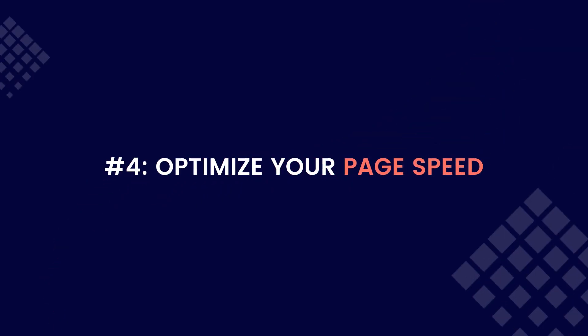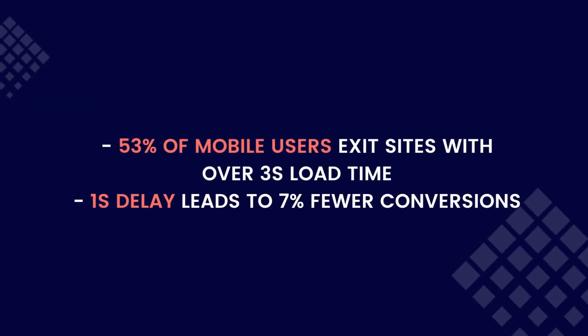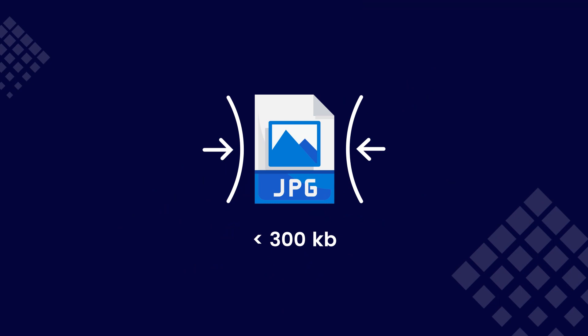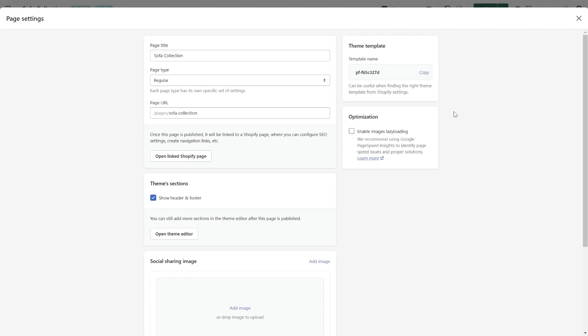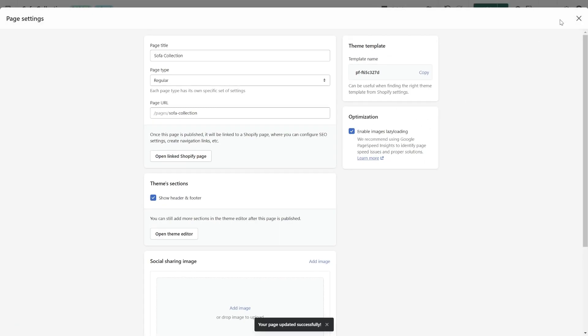Finally, optimize your page speed. In fact, 53 percent of mobile visitors leave a site that takes longer than three seconds to load, and a one second delay means a seven percent reduction in conversions. Here are our suggestions: compress and optimize your images, keeping the ideal weight around 200 to 300 kilobytes. Optimize your lazy load — you can easily do this in just one click with PageFly.